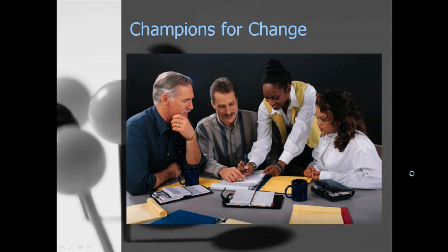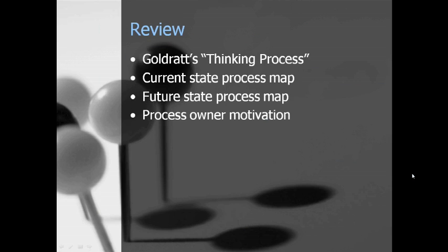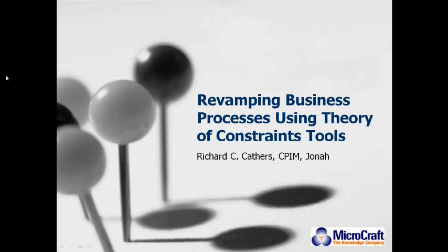In wrapping this up: we took a component of Theory of Constraints — Goldratt's thinking process — and applied a couple of its areas to how this organization needed to modify their business practices: creating a current state process map, a future state process map, and most importantly, at the end of the project we got all of the process owners to become process champions who actually drove the change. With that, I'll open it up for questions.